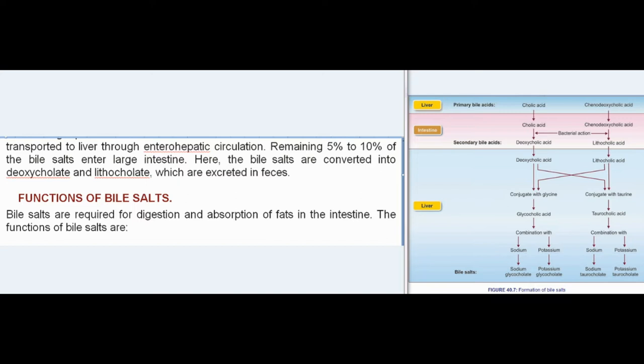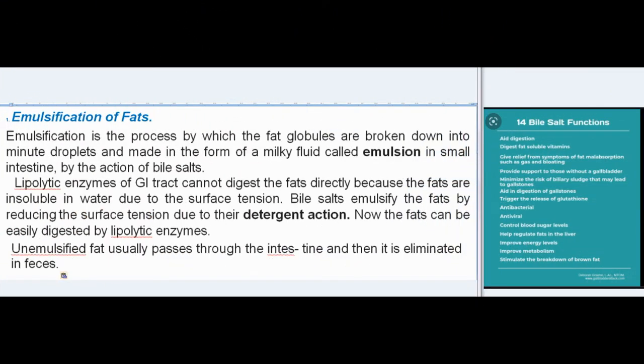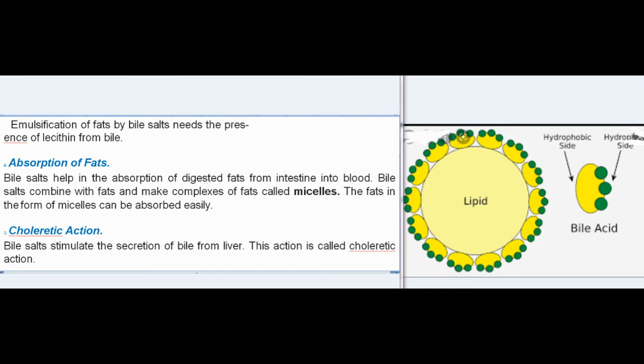Bile salts are required for digestion and absorption of fats in the intestine. Functions include emulsification of fats: bile salts break down fat globules into minute droplets forming an emulsion in the small intestine. Lipolytic enzymes cannot digest fats directly because fats are insoluble in water due to surface tension. Bile salts emulsify fats by reducing surface tension through their detergent action, allowing fats to be easily digested. Unemulsified fat passes through and is eliminated in feces. Emulsification requires the presence of lecithin from bile.